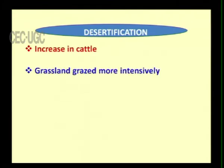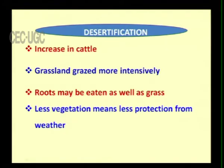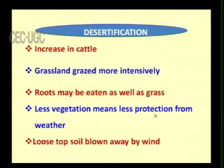On the animal side, as human beings increase in number, cattle numbers also increase. The grassland is grazed more intensively and animals eat the grass as well as the roots. Less vegetation means less protection from weather, and again the loose top soil is blown away by wind. By these two ways — human and animal activity — the land becomes a desert in due course.